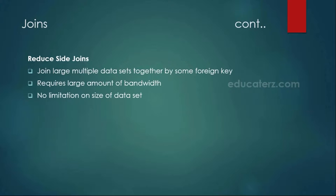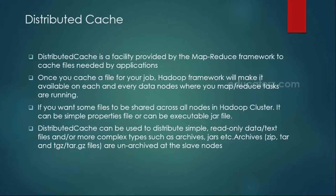Unlike the map-side join, you have no limitation on the size of the data set in the reducer-side join. In the map-side, if the file size is less than 100 MB, it is recommended to use the distributed cache. If it is more than that, you can use the reducer-side join. In this module, we are going to see how to implement the map-side join with the help of the distributed cache. In the next module, I will be showing you how to write your code for the reducer-side join.